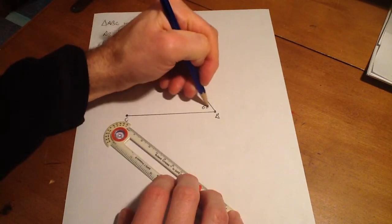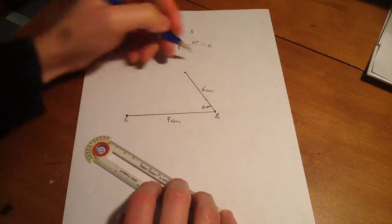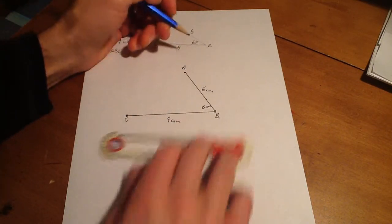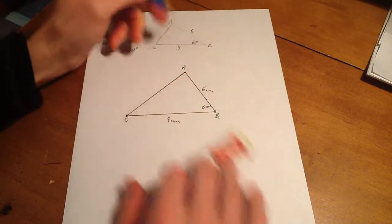This angle here is 60 degrees, this is 6 cm here, and this was 9 cm. This is point A up here, and all I need to do is finish the triangle by connecting point A to point C.